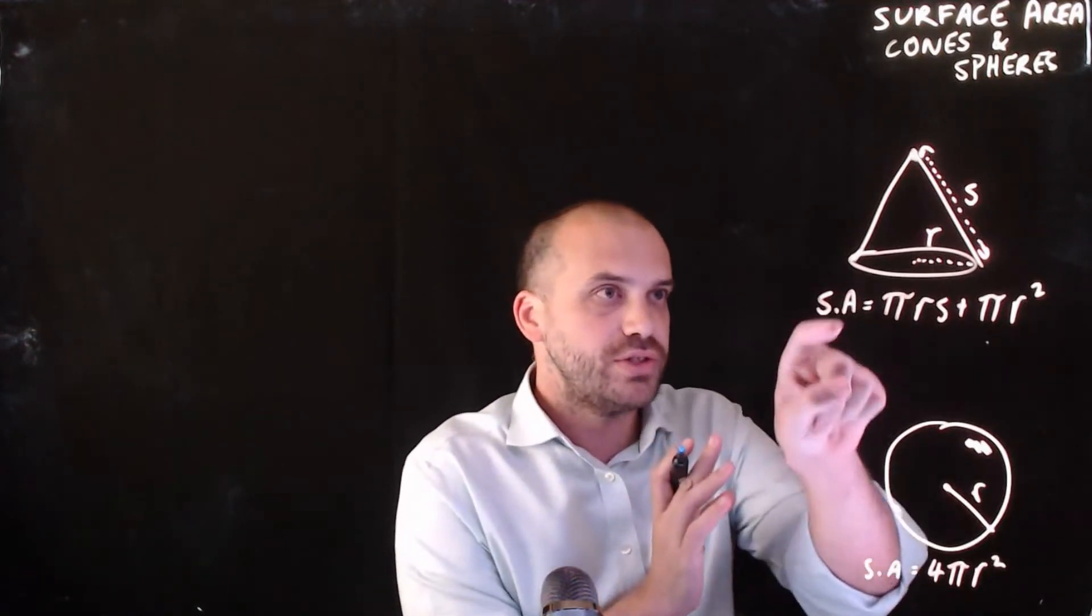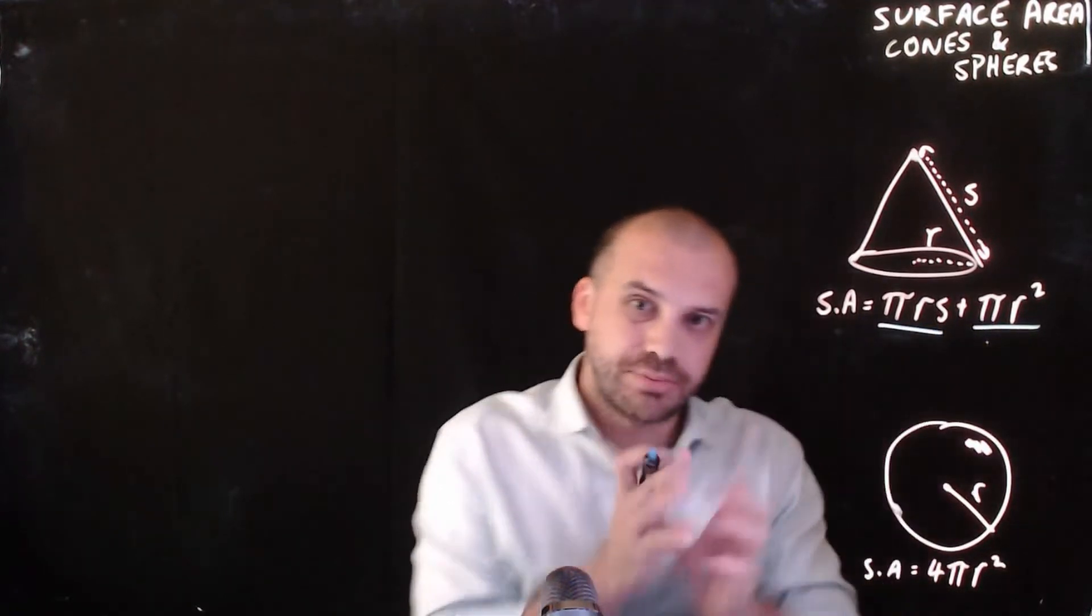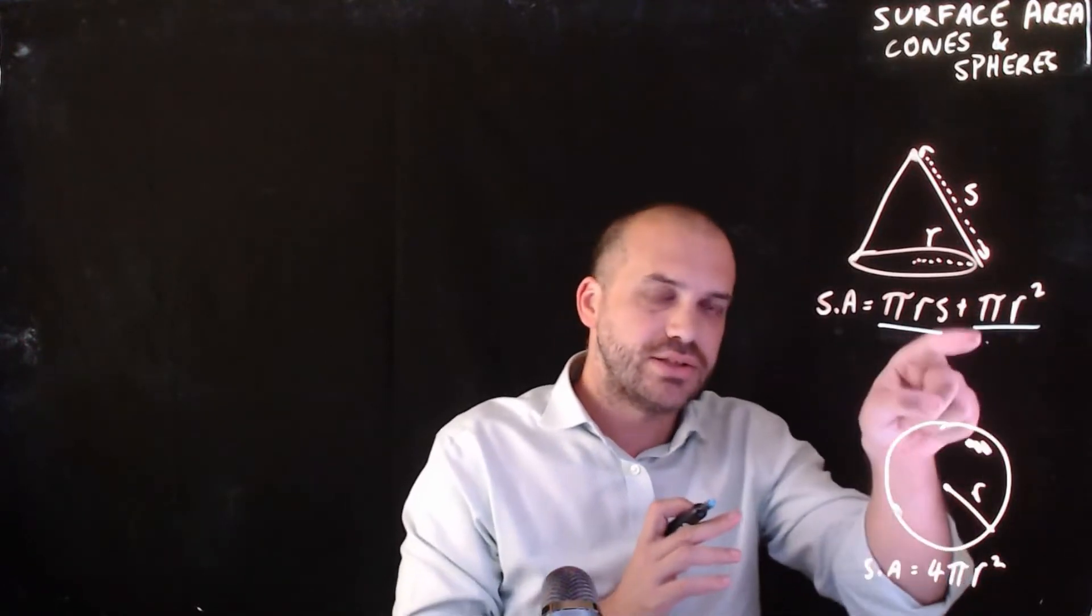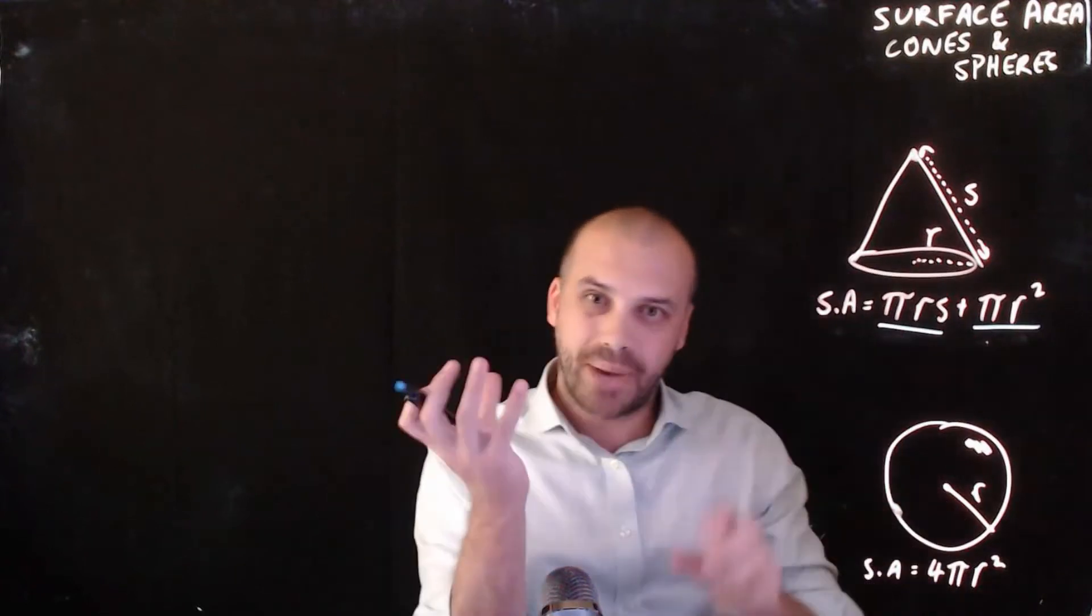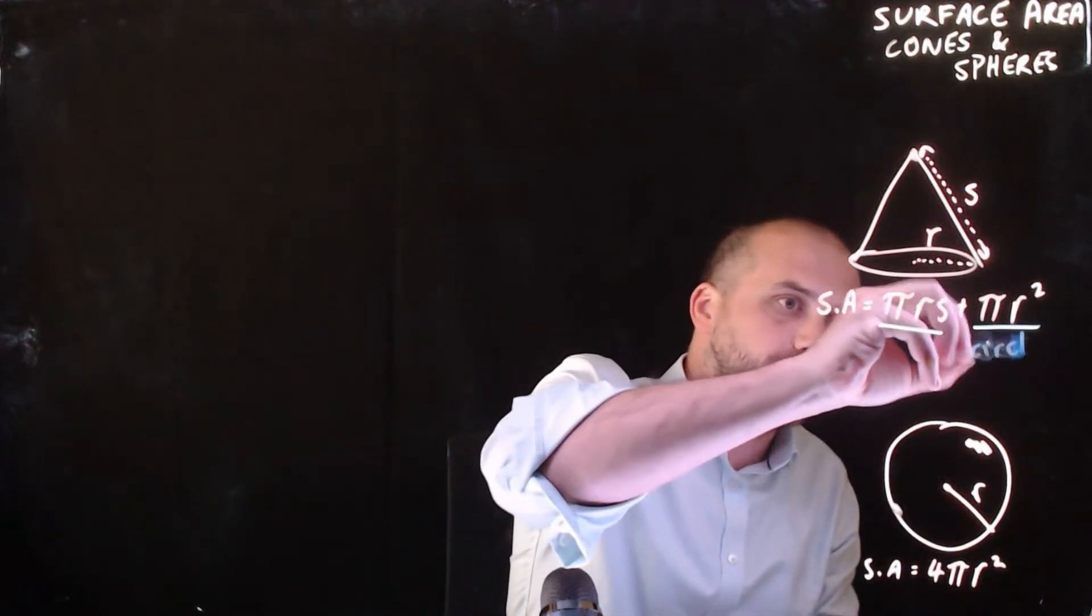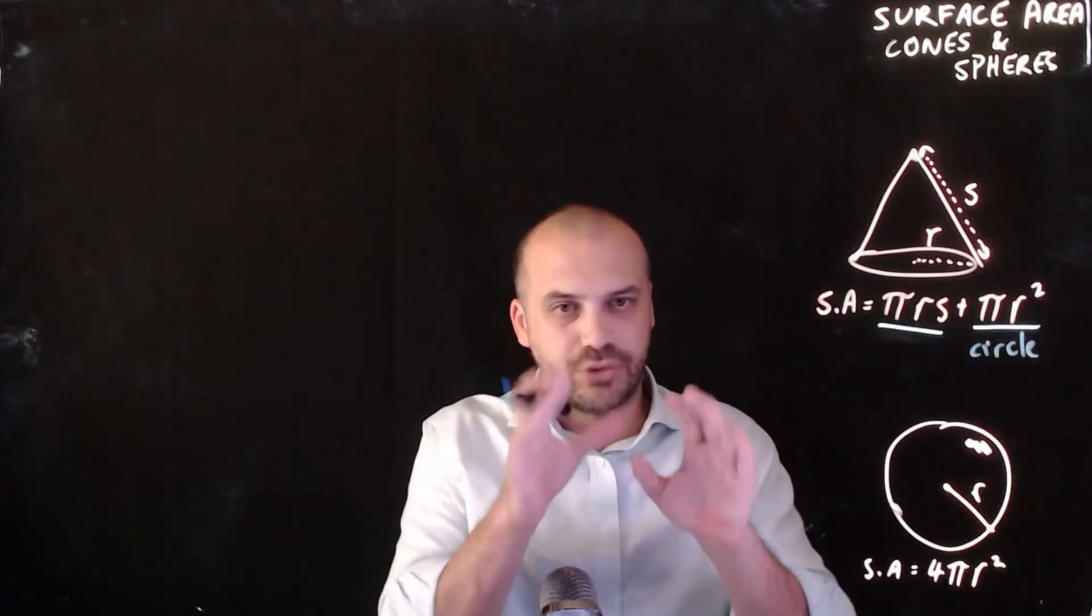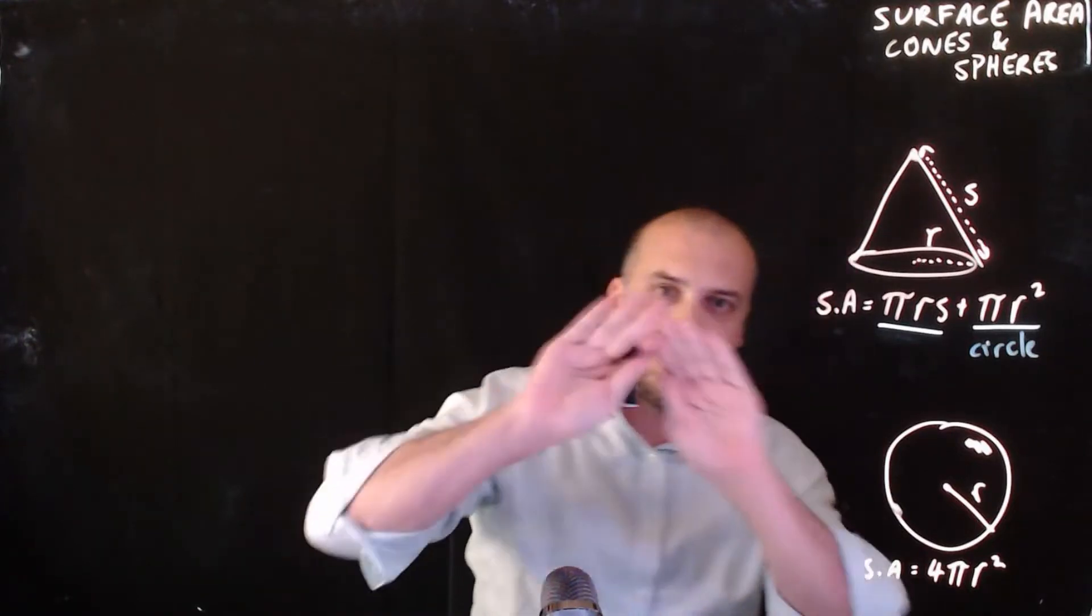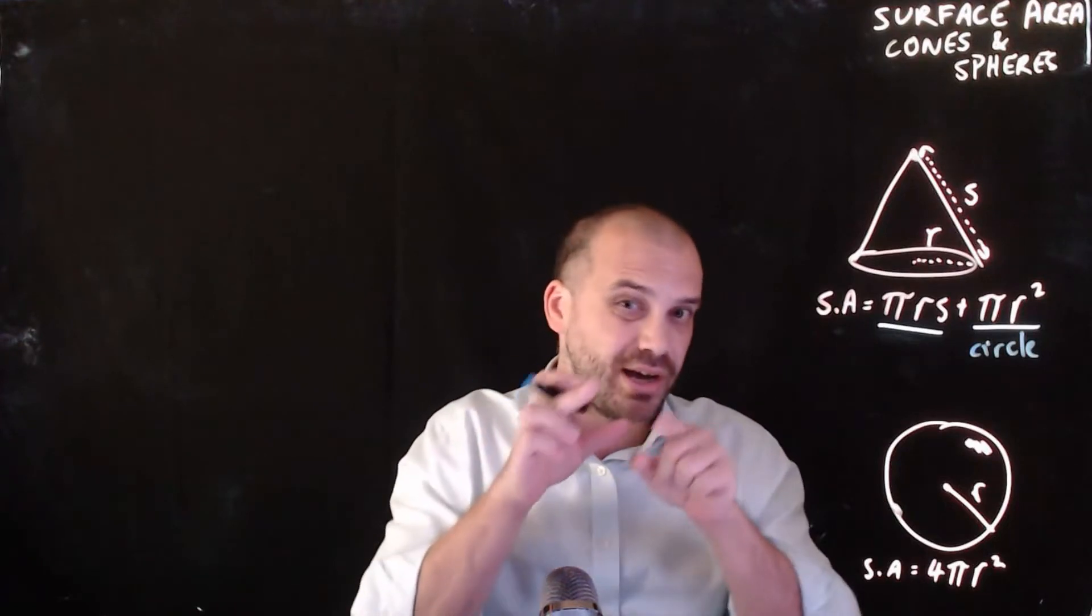Now the surface area of a cone is broken into two distinct parts. Pi r squared, you recognize that, that's a circle. And this pi r squared here refers to the base of our cone. So this is just the circle part of our cone, which leaves this part here, which refers to the bit around the outside, the slanted bit around the outside. And the formula for that is pi r s.